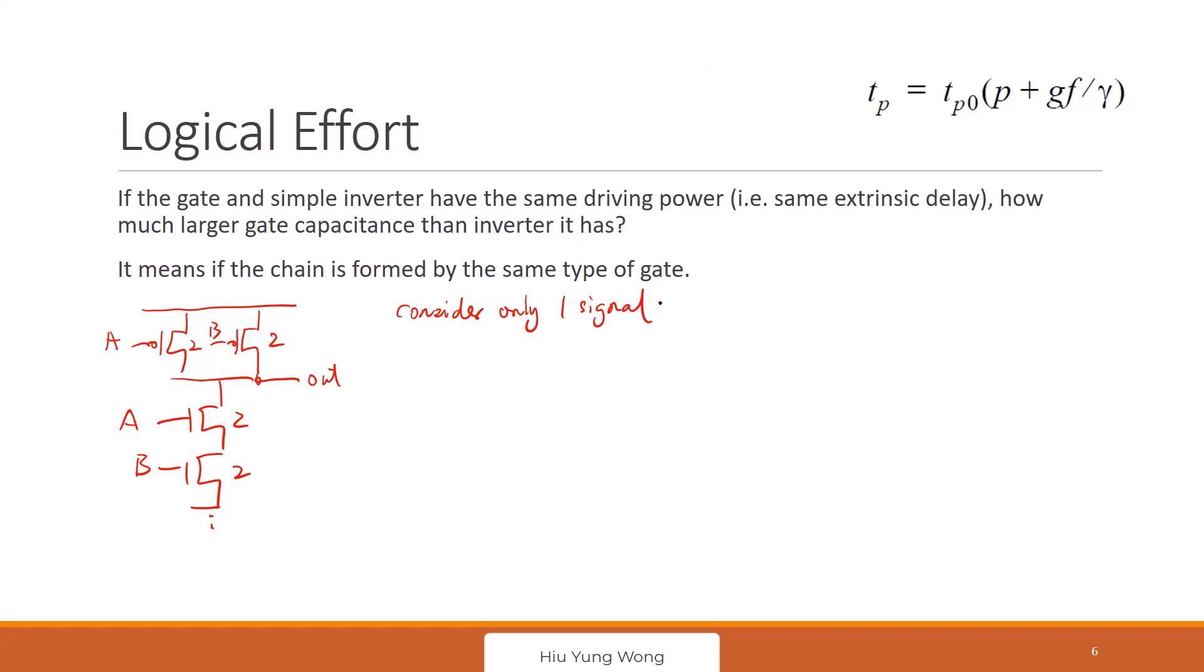So for example, what is the gate capacitance seen by A? It's 2CGP and 2CGN, correct? But what is the gate cap seen in inverter? Let's just recall. The inverter comes this way, right? 2,1. So it's 2CGP plus 1CGN.